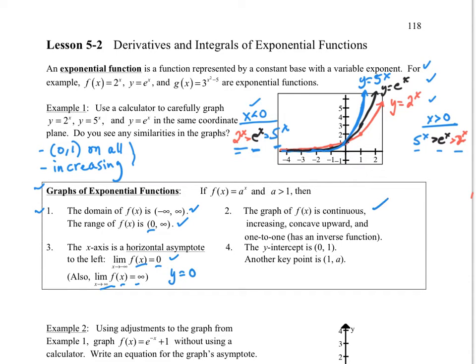Then the graph is continuous, increasing, concave upward, and one to one. That means f' is greater than 0, and f'' is greater than 0, because it's increasing and concave up. The y-intercept is (0, 1). Another key point: if you plug in 1, you just get out whatever the base is, so it's (1, a).